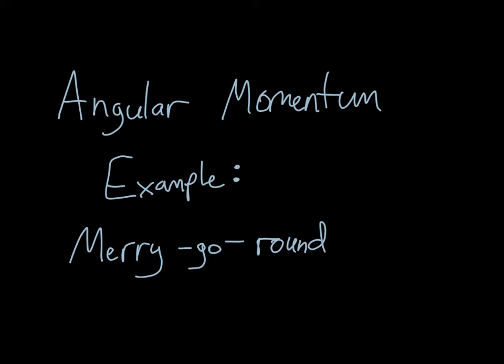Hey folks. Today we're going to run through an example of a problem that we would solve using conservation of angular momentum — a fairly common example for this topic. That's a person riding on a merry-go-round and then changing their position on it, and looking at how that affects the motion of the merry-go-round and person system as a whole. So let's get started.